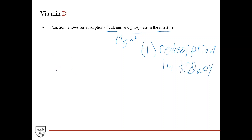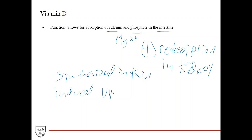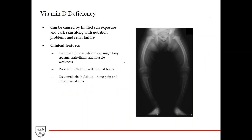Vitamin D is synthesized in the skin, induced by UV light from the sun. Sun exposure helps ensure adequate vitamin D levels. Vitamin D deficiency can be caused by limited sun exposure, and has been seen in individuals with dark skin living in temperate climates — though that's not fully understood. Malnourished patients and those with renal failure are also at risk.